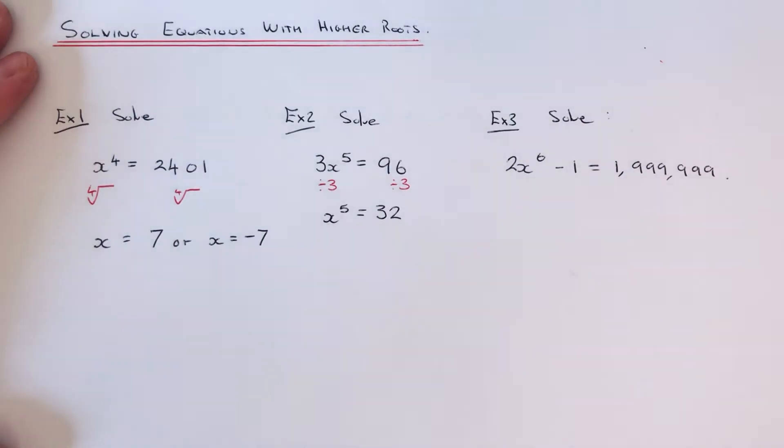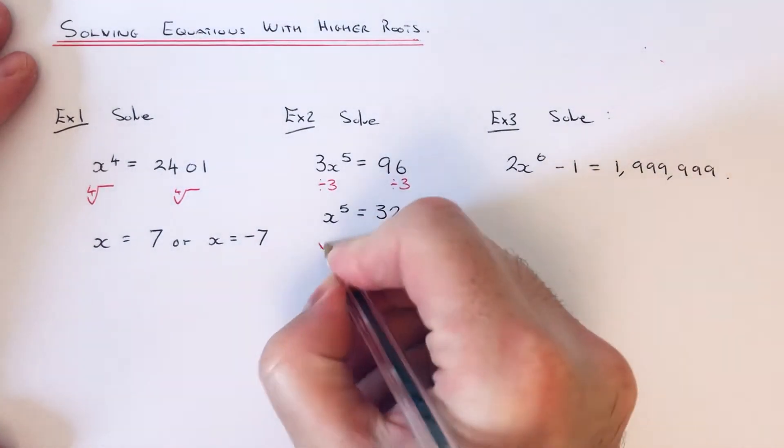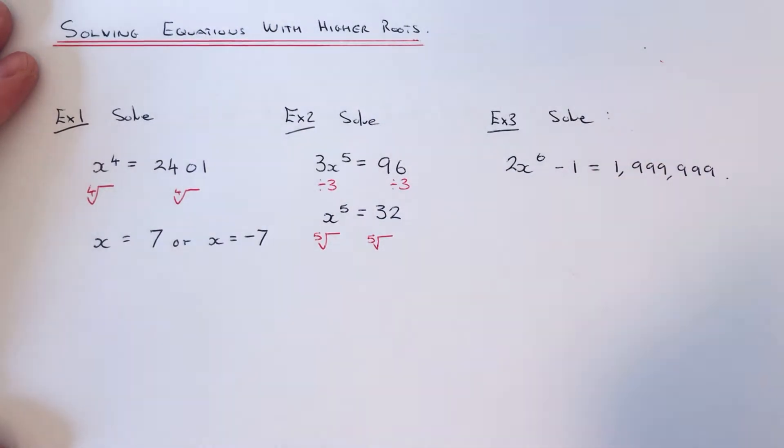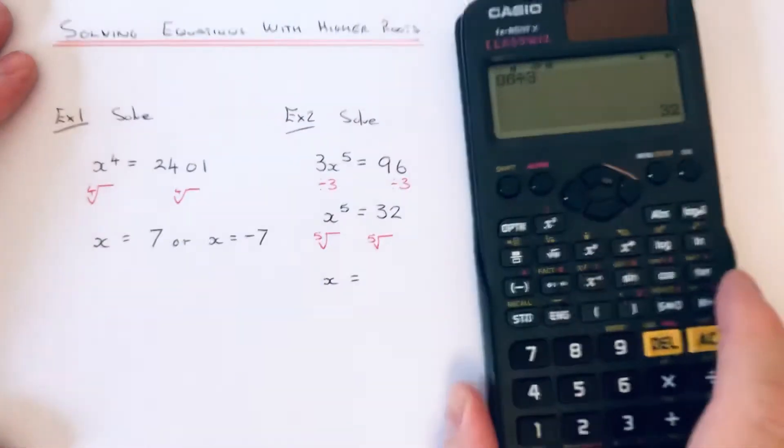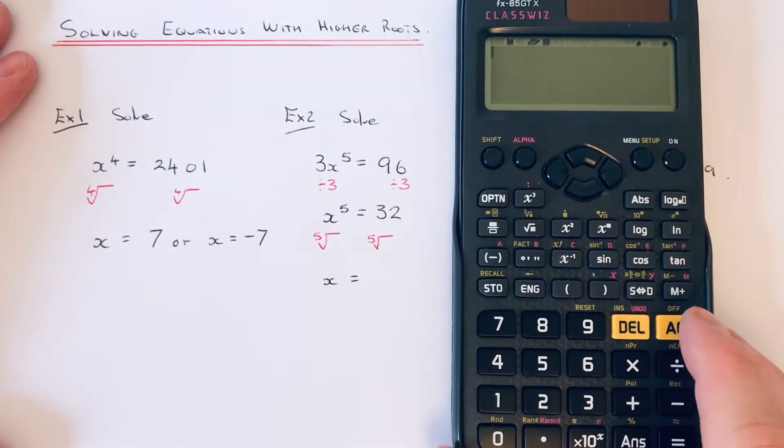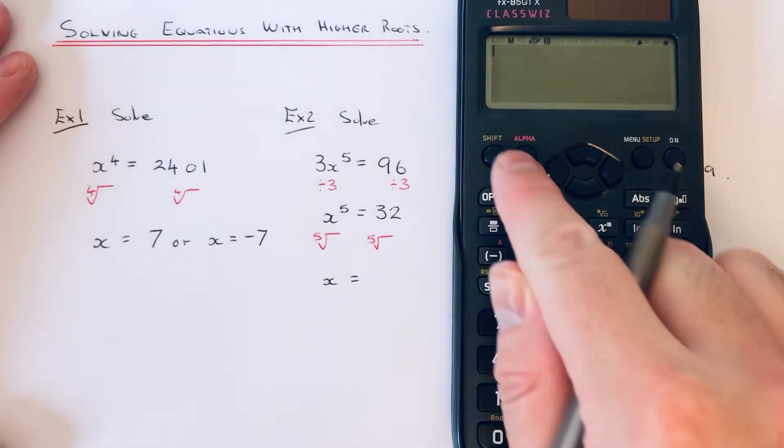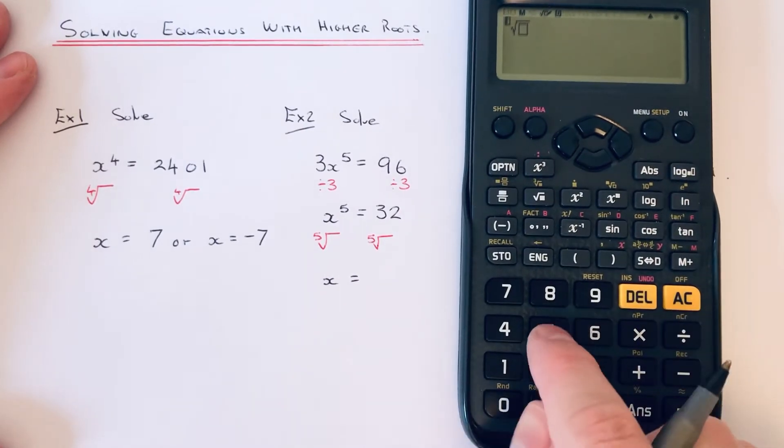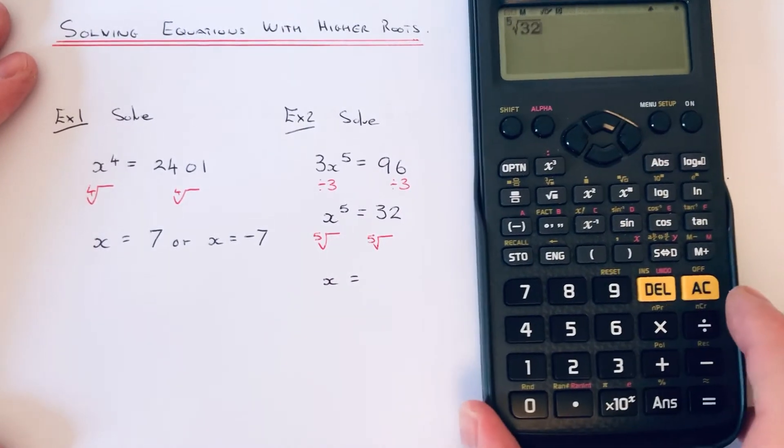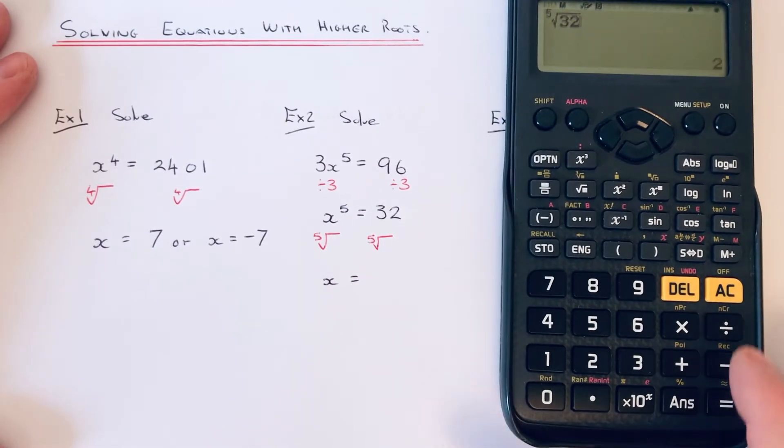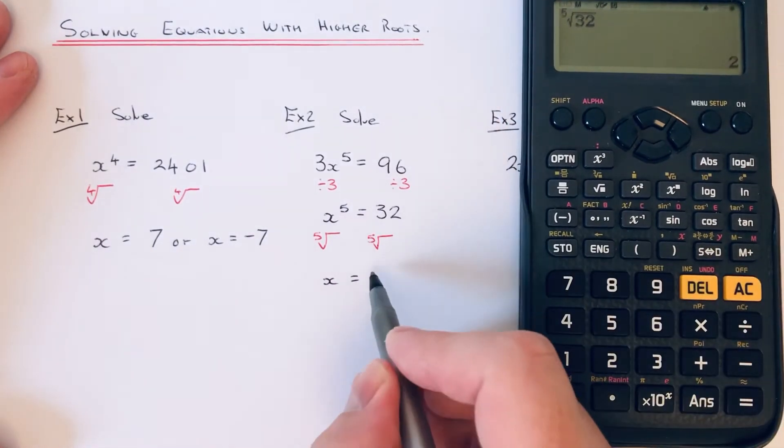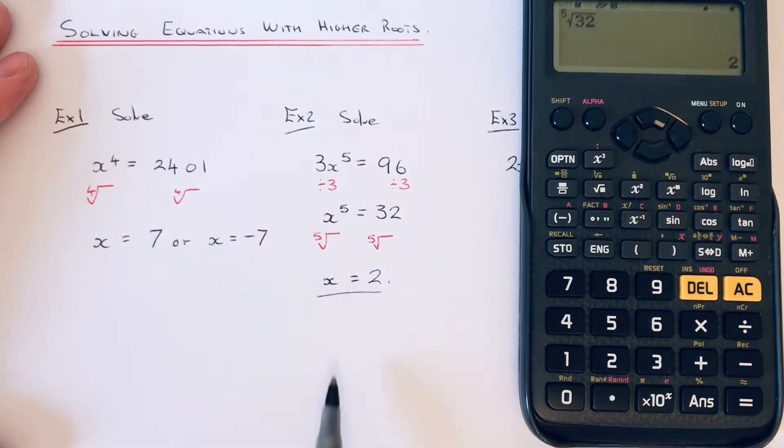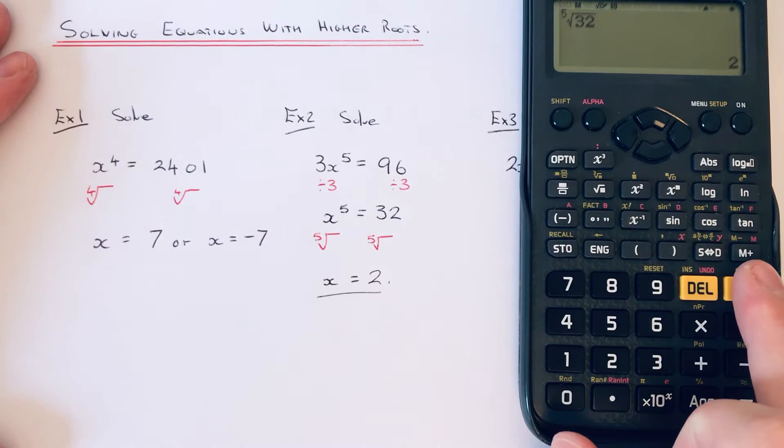We need to do the fifth root of 32, so go shift power key. If we type a 5 there, put 32 there, we get the answer 2. That's the only solution this time because the power was an odd number, so there wouldn't be a negative solution.